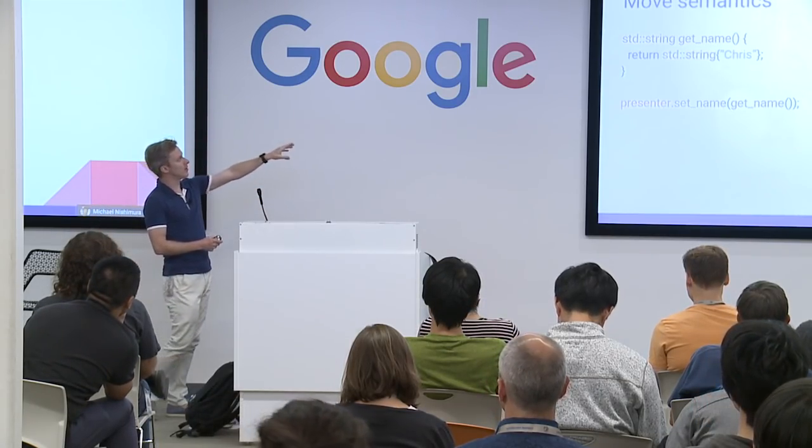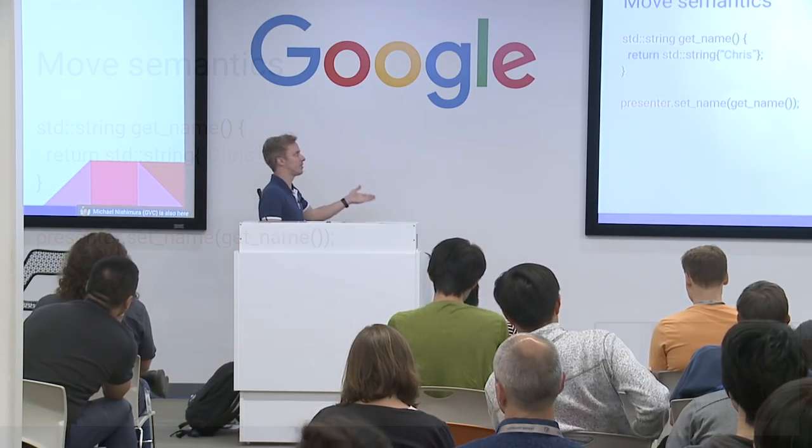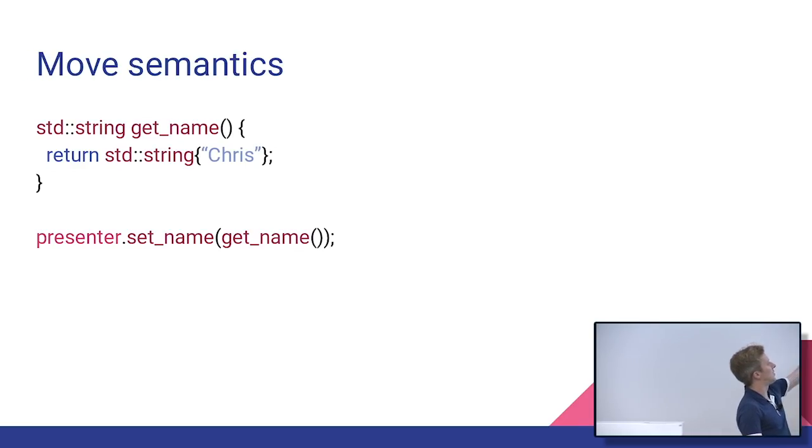there's a concept of moving. So here's an example where we have this function getName. It returns a string chris. And then we call presenter.setName with the result of getName. In old style C++, we would consider that temporary. And so this thing, the string that's being returned, it doesn't have a variable it's really being stored into. It just kind of gets silently created and then passed along and silently destroyed, hence the temporary name. But that means that we're going to be making lots of these temporaries, constructing them and destructing them, making copies of them. That's a little bit wasteful, especially if we know the thing is about to be destroyed anyway. Then why create a new thing, destroy it? It's kind of silly.